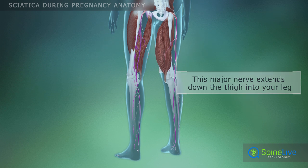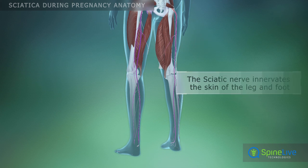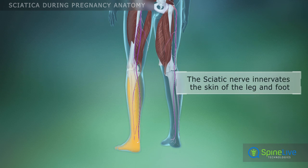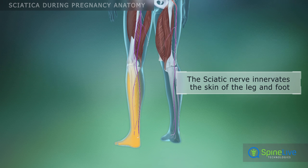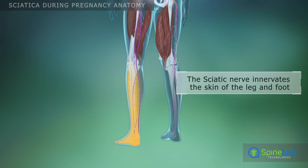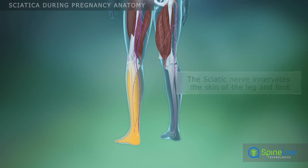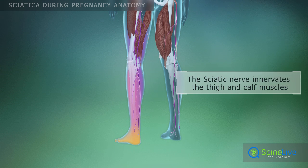The sciatic nerve supplies sensation to the skin of the leg and foot. It also supplies the muscles in the back of the thigh and in the calf.